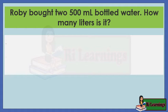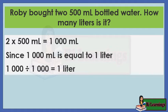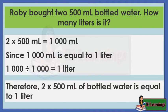Roby bought two 500-milliliter bottles of water. How many liters is it? Two bottles of 500 milliliters equals 1,000 milliliters. Since 1,000 milliliters is equal to 1 liter, 1,000 milliliters divided by 1,000 equals 1 liter. Therefore, 2 bottles of 500 milliliters of water is equal to 1 liter.